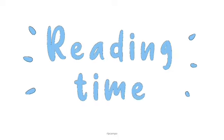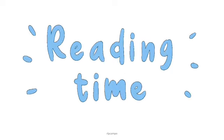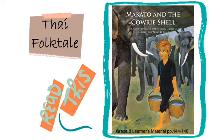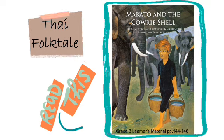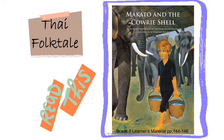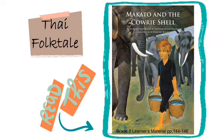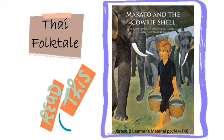It's reading time. What you're going to do is read the story, take note of the important characters and events, then prepare for our activity. You will be reading a Thai folk tale titled 'Makato and the Cowrie Shell.' You may pause the video while reading the selection, then play it again once you are done and proceed to the activity.